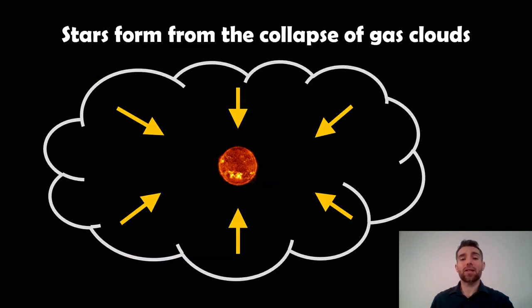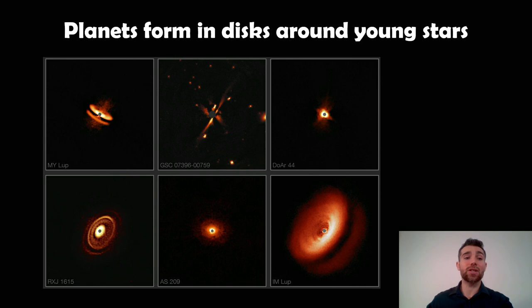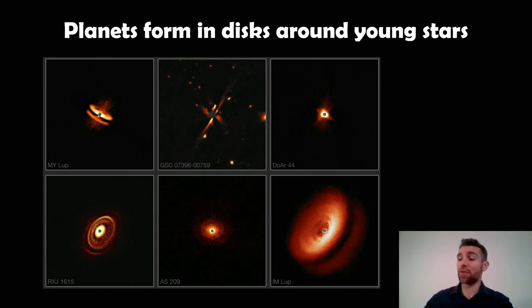When planets form they typically form around a star, so the star will collapse from a cloud of gas. We assume that most planets will form with the stars as they are actually forming at the same time. They form a disk around the young star — these are some images of disks around young stars. At this point these stars are not on the main sequence, they're not fusing hydrogen in their core, and as a result they don't have strong stellar winds to blow away the gas. So you still have these gas disks around them, which is where the planets will form before the star becomes a proper star and blows away all the gas.